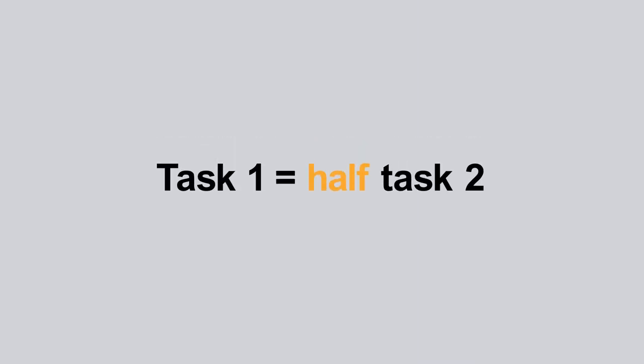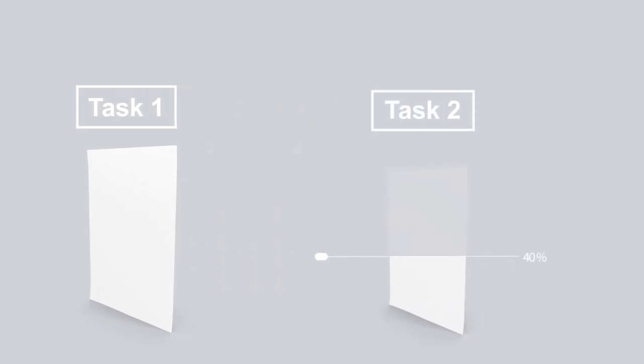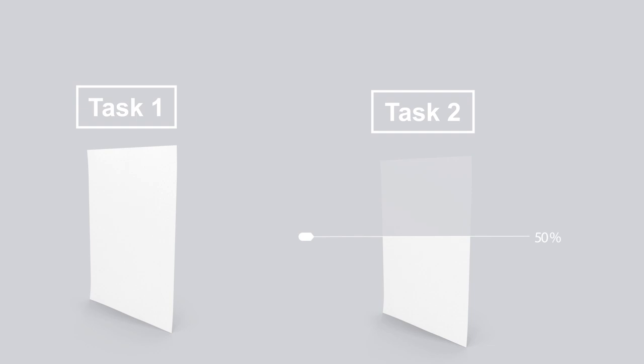Another reason for this is that Task 1 is worth half as many points as Task 2. It means the best possible written Task 1 is worth 50% of a well-written Task 2, so it is wise to allocate more time for Task 2. Speaking about time, you must spend 20 minutes writing this essay.